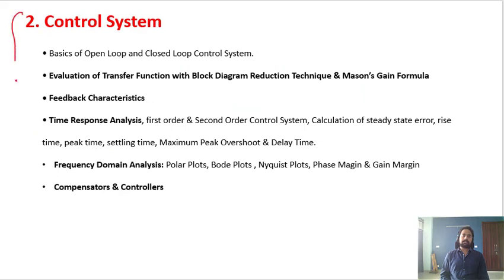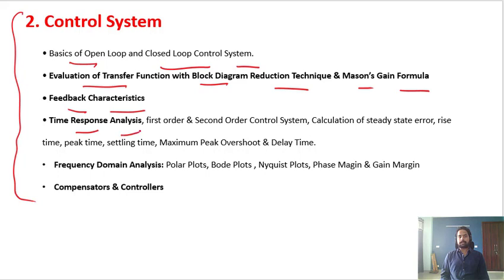Next is Control System. This subject carries major importance in this exam. First is basics of open loop and closed loop control system. Next is evaluation of transfer function, which can be calculated by block diagram reduction technique and Mason's gain formula. Then feedback characteristics, and time response analysis covering first order system, second order system, calculation of steady state error, rise time, peak time, settling time, maximum overshoot, and delay time.